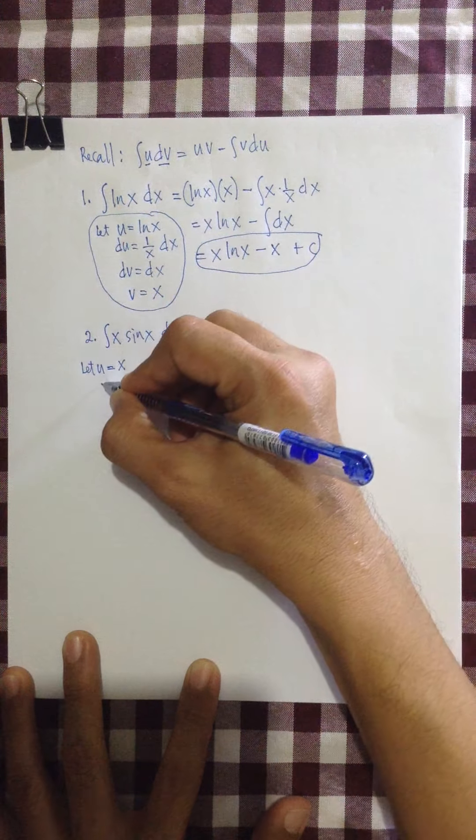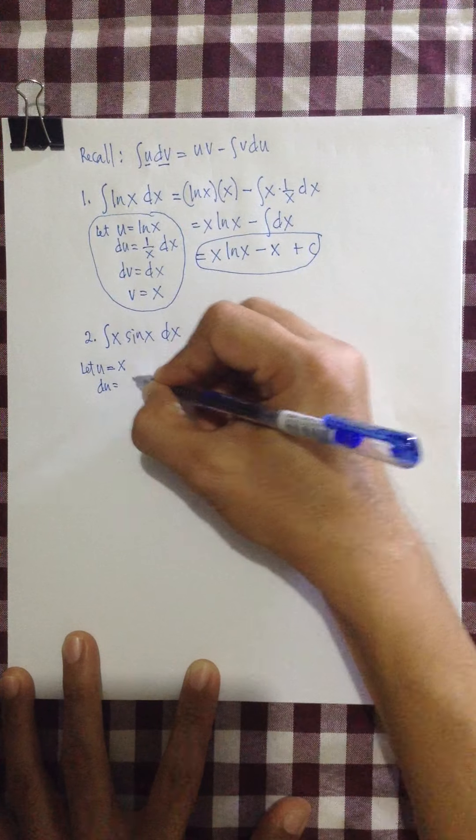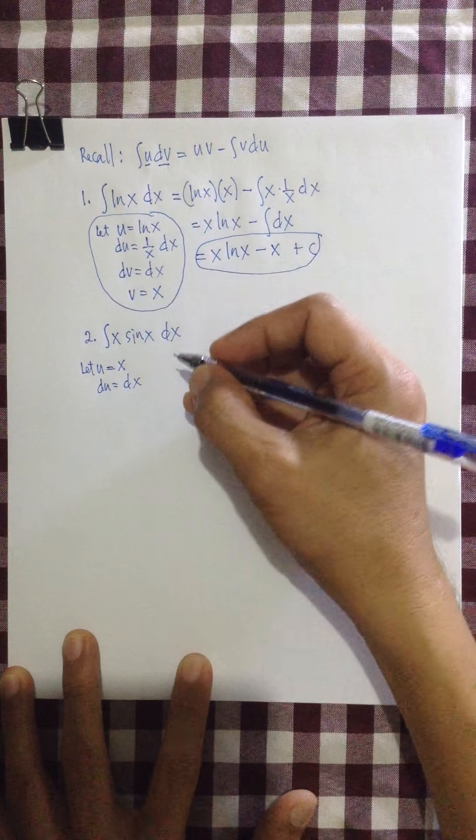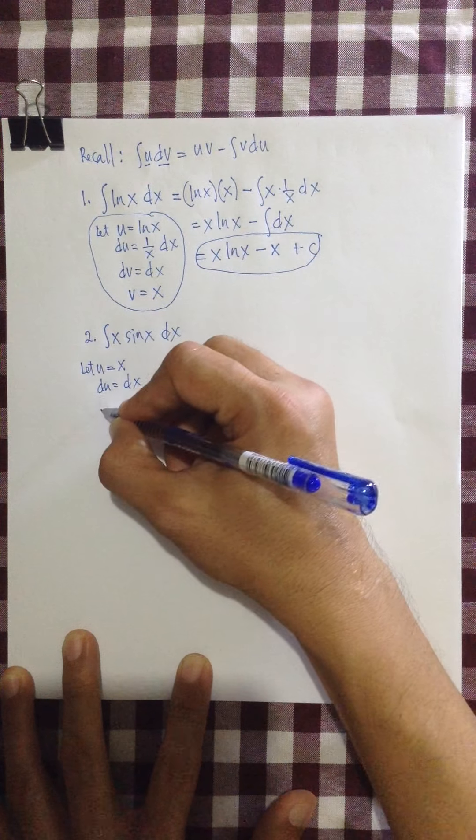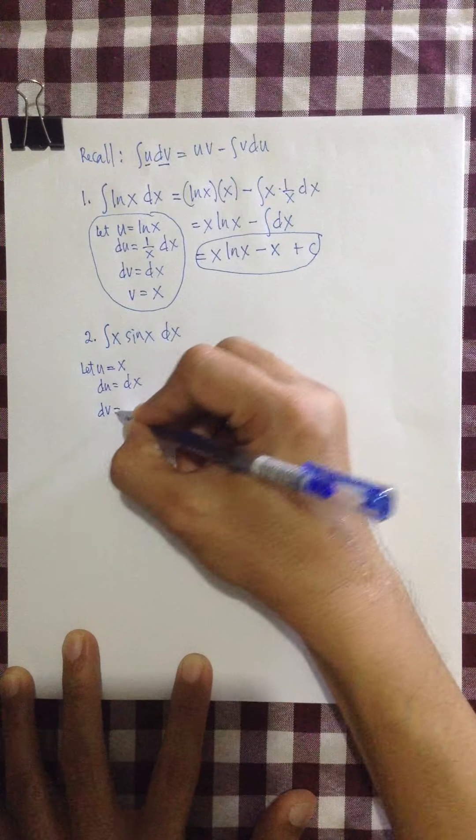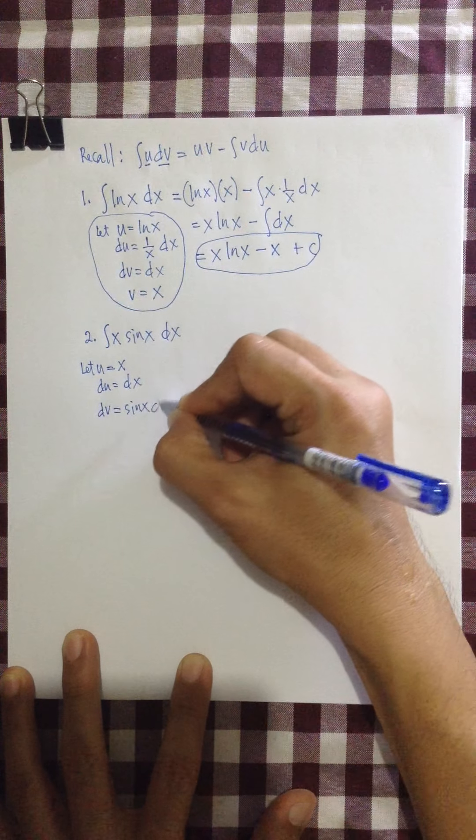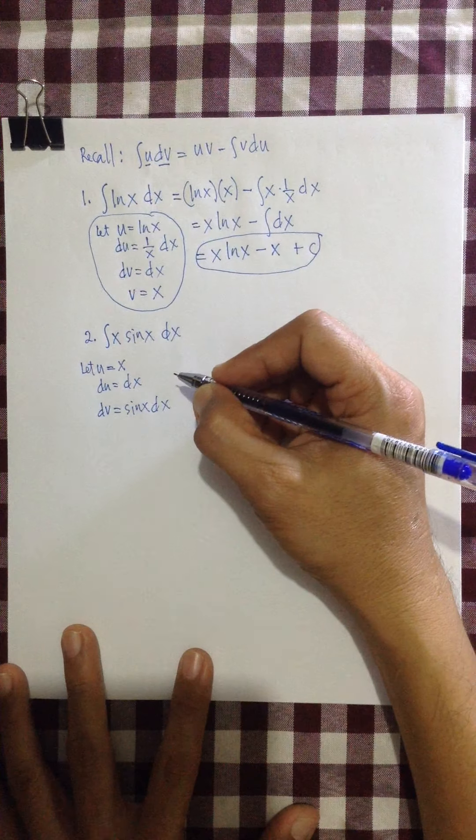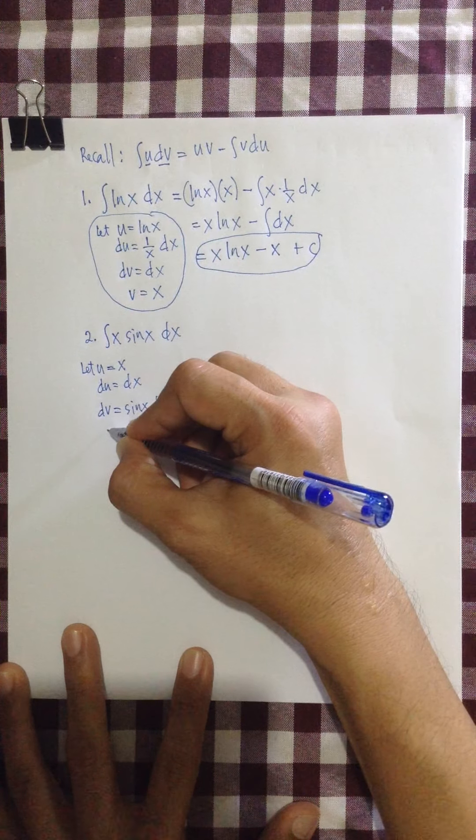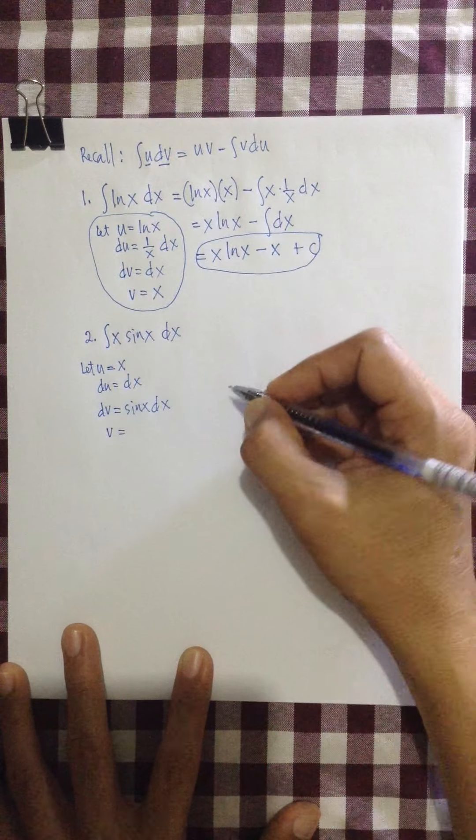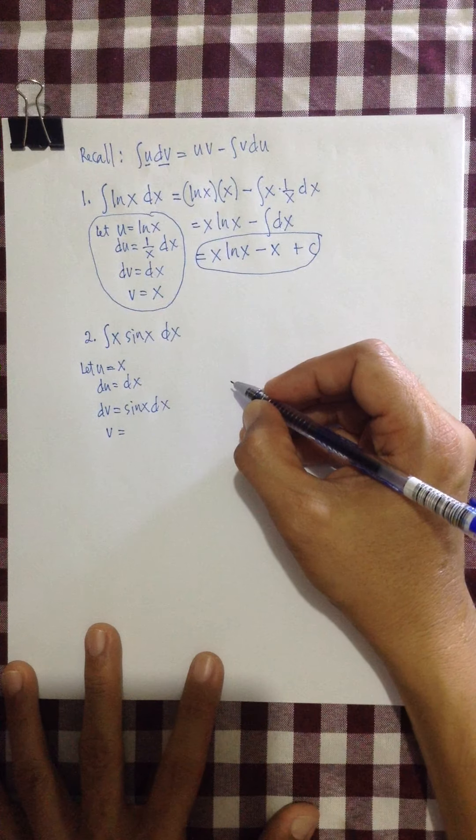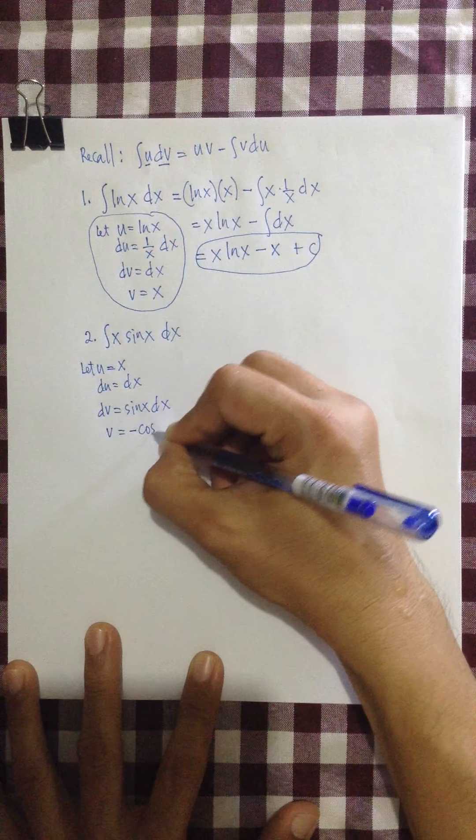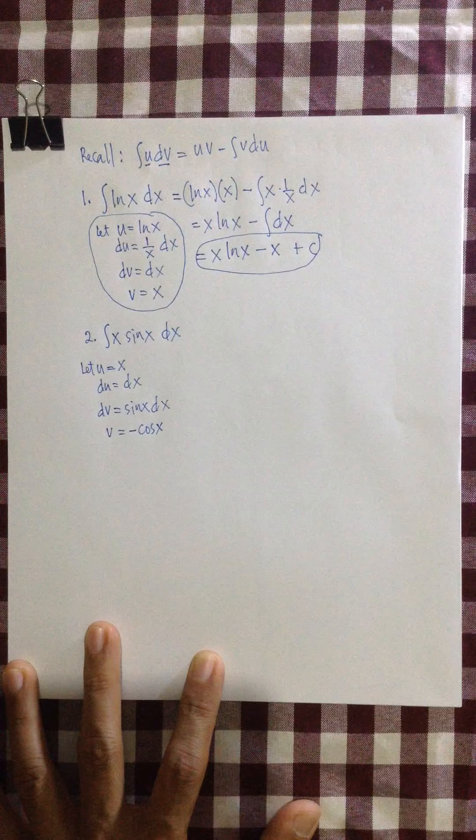And your du, of course, is the derivative of x, which is dx. Now, obviously, your sine x is your dv. So that would be sine x dx. Then we evaluate the integral of both sides. Of course, the integral of dv is v. Well, the integral of sine x dx is what? That's negative cosine x.